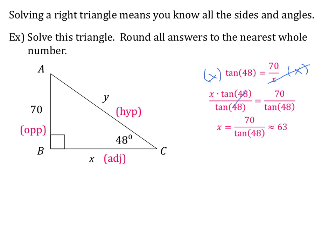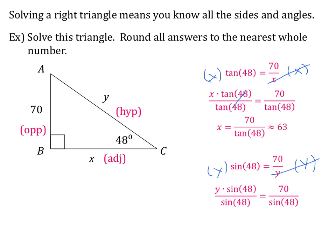Now I want to find y. Using 70 again — that's opposite — and y is the hypotenuse. SOH CAH TOA tells me opposite and hypotenuse correspond to SOH, so I'll use sine. Sine of 48 equals 70 over y. Multiply both sides by y: y times sine of 48 equals 70. Divide by sine of 48 to isolate y: y equals 70 over sine of 48. Typing that into the calculator gives approximately 94.